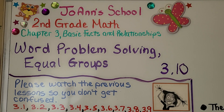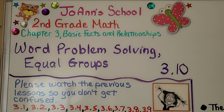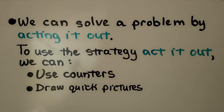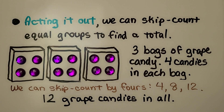Lesson 3.10: Word Problem Solving with Equal Groups. We're also going to talk about skip counting. We can solve a problem by acting it out. To use the strategy 'act it out,' we can use counters or draw quick pictures. We can skip count equal groups to find a total.